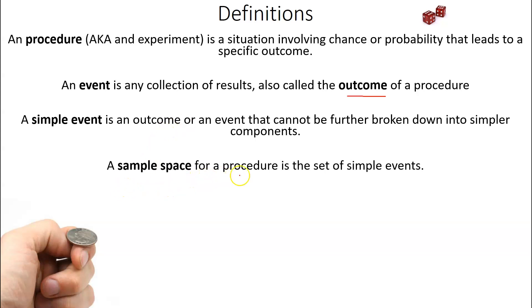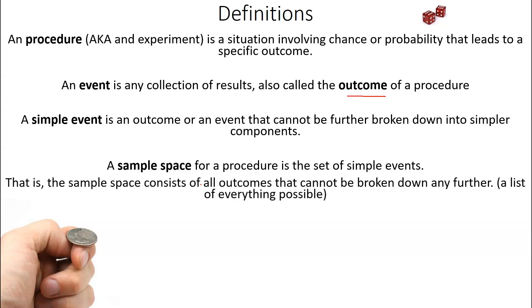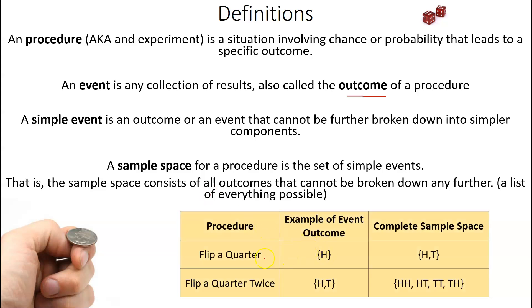A sample space for a procedure is the set of simple events. A sample space, it could be an equation. It can be a picture. Basically, you're somehow describing everything that could possibly happen. That's not necessarily a textbook definition of sample space, but that's really what's going on. You're describing everything that could possibly happen, and there isn't one correct way to do that.